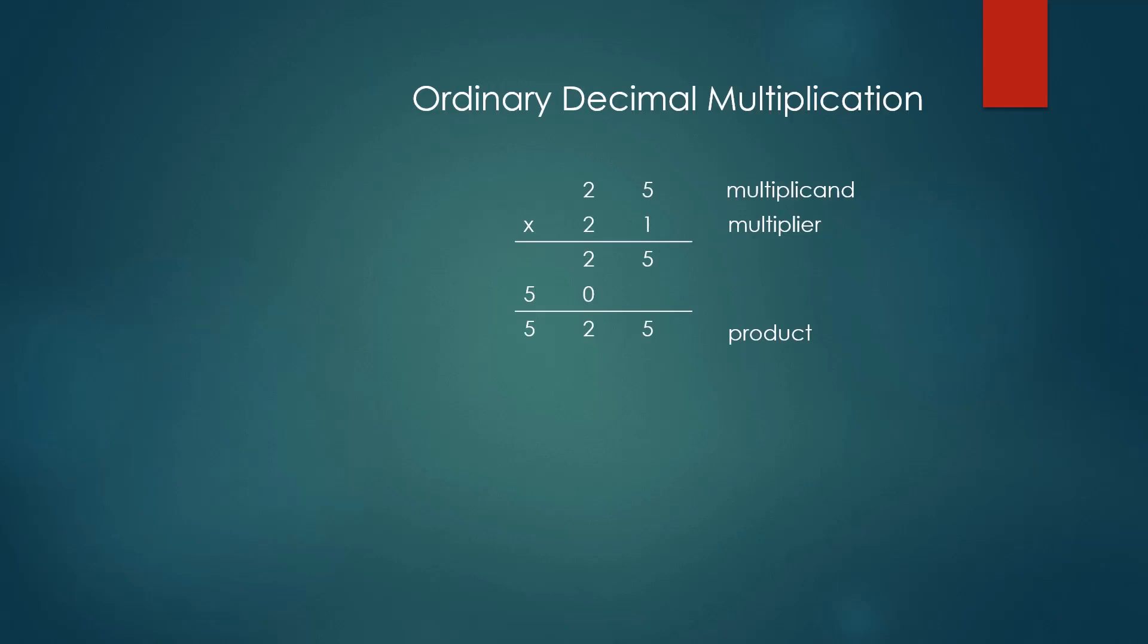You are most likely already familiar with the algorithm that we're going to use. To illustrate, let's walk through a typical multiplication problem using the algorithm you were probably taught in elementary school. You start with the rightmost digit of the multiplier, and for each digit, you multiply that digit times the multiplicand, writing the results below the bar. So 1 times 25 is 25.